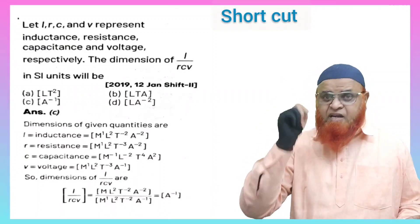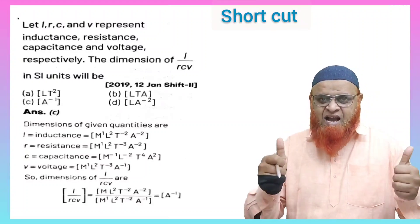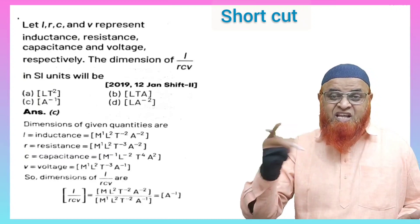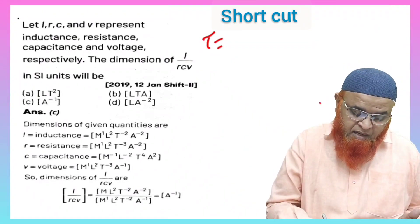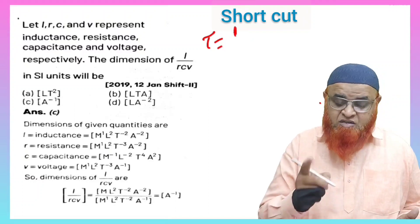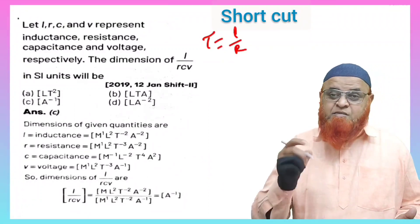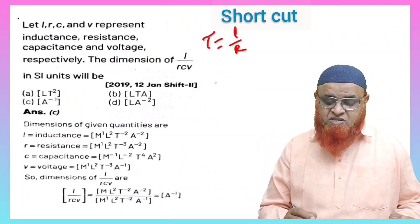But is there any technique to remember this? Is there any technique to solve the problem? Yeah, definitely. For example, when you go to growth and decay of current chapter, you all know that time constant tau is taken as inductance by resistance. So inductance by resistance can be taken as time constant.